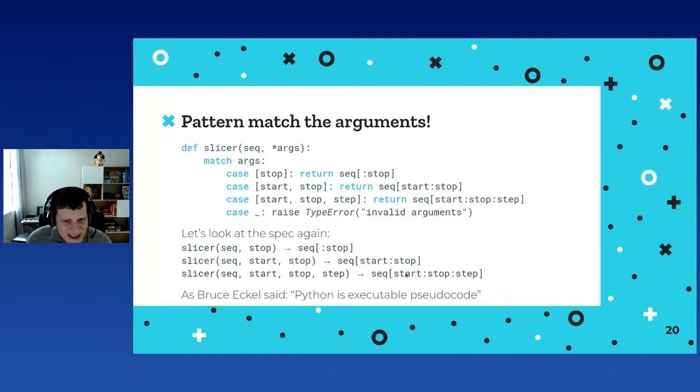Remember that cases are checked from top to bottom. So this ensures that this is a very general case that always will match, but we will only execute this block if none of the cases above happened. So if you look at the spec again, you will see that this looks really, really similar to our spec. As someone said, this is like executable pseudo code. So you can see that in this scenario, pattern matching allows us to capture our intent as developers and make very elegant and readable code, which is something nice.